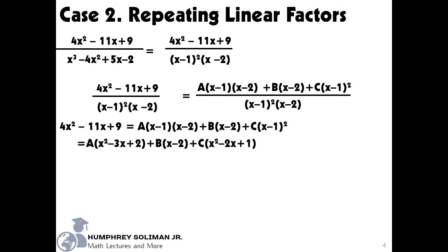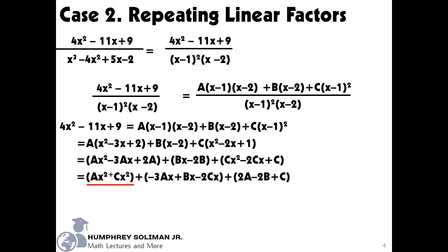Then we can start simplifying our right side by multiplying the quantities beside A and expanding the square of the quantity beside C. After that, we can now distribute the variables A, B, and C carefully. Next is to group together the terms with x², the terms with x, and the constant terms.